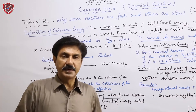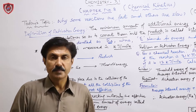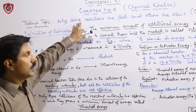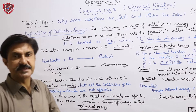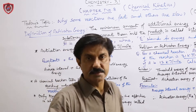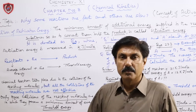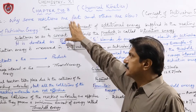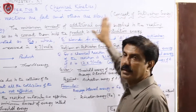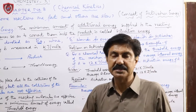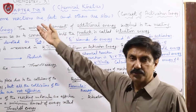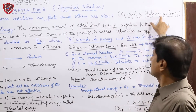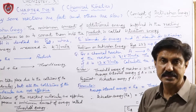Today we continue from the same chapter. The key question is: why is any chemical reaction fast or slow? The velocity, rate, or speed of a reaction depends on the reaction's activation energy. So the concept behind why any reaction is fast or slow is the concept of activation energy.